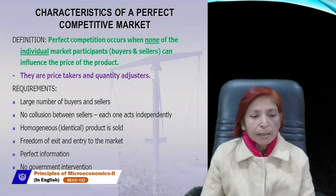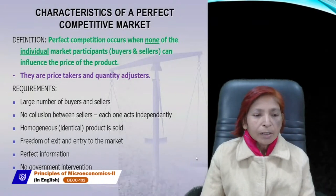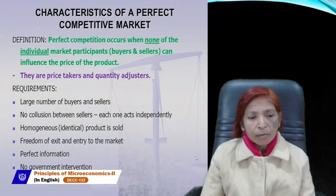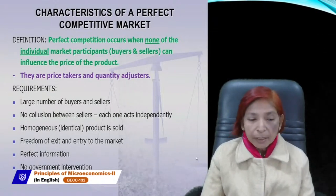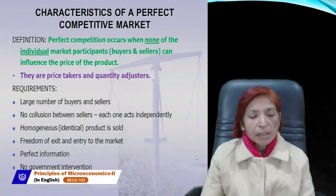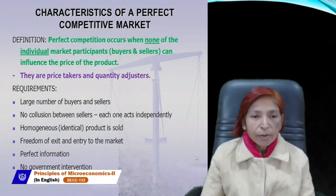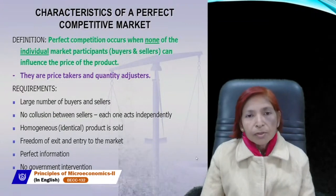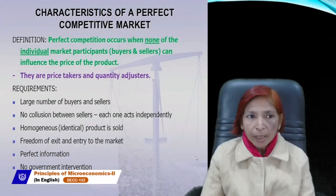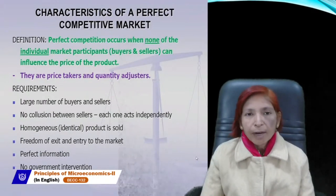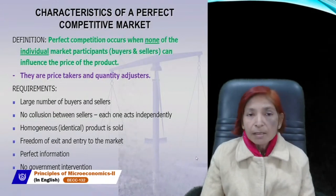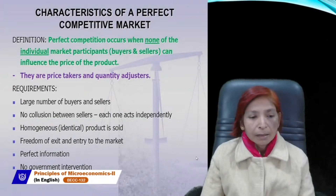Sometimes labor is also not mobile — for example, labor may not be willing to go to distant locations. Capital includes fixed assets like buildings, machines, and equipment that sometimes cannot be shifted. So all factors of production are not perfectly mobile. We assume factor mobility under perfect competition, but this assumption is not realistic.